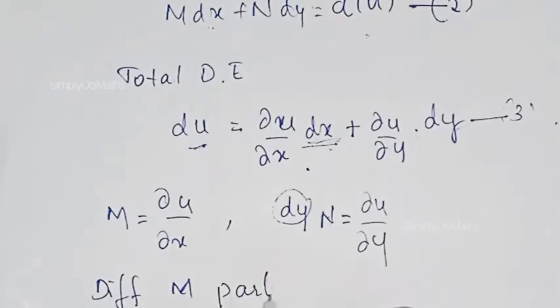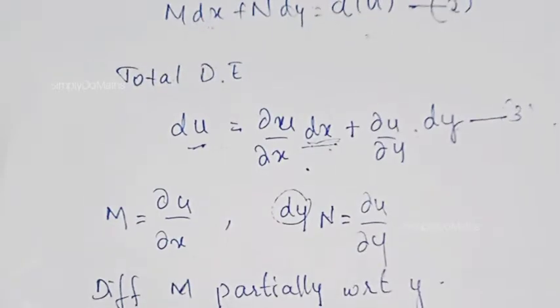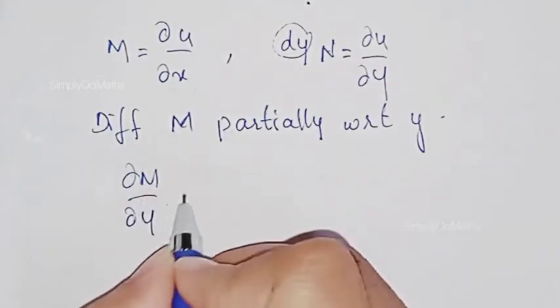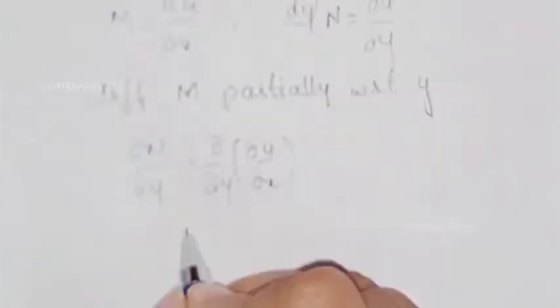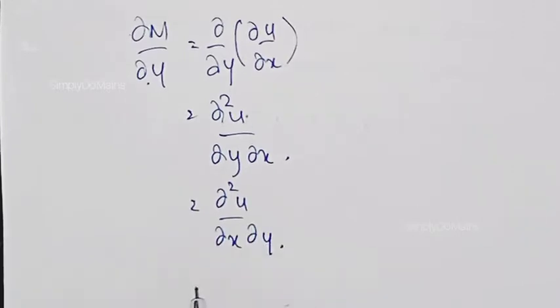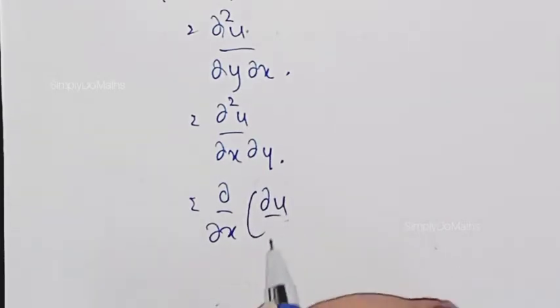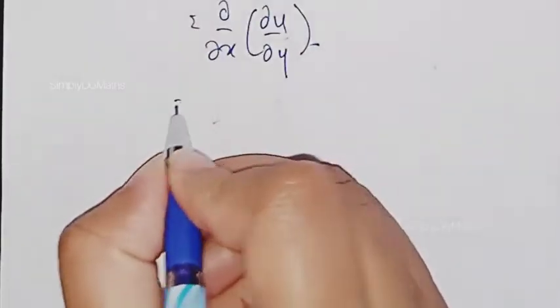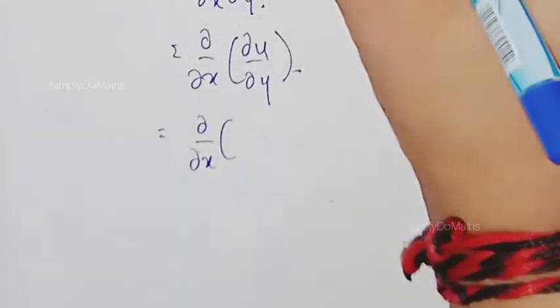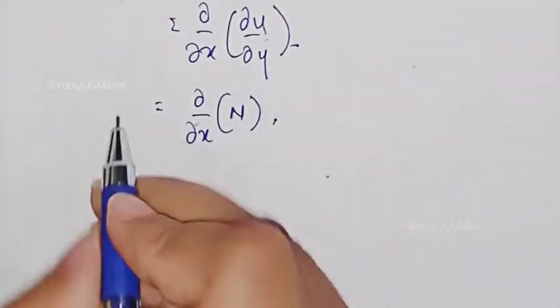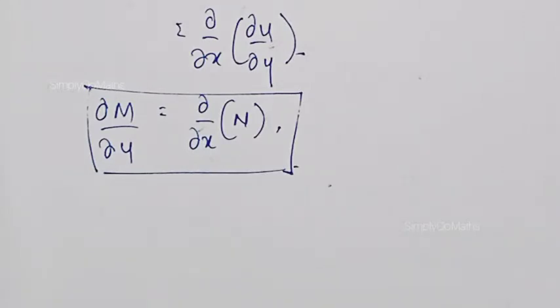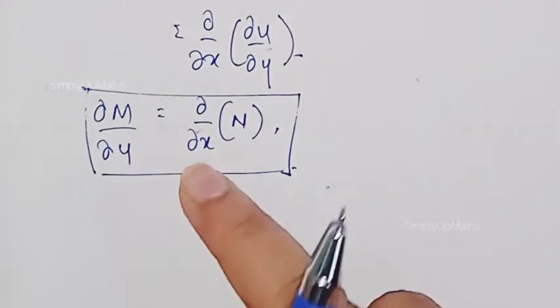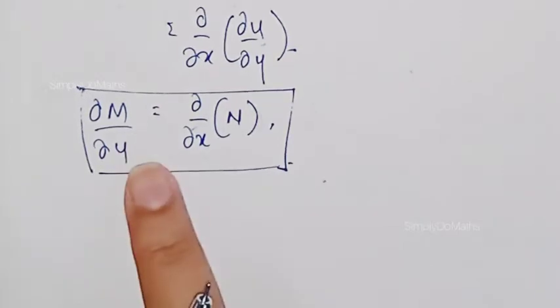Differentiating M partially with respect to y, we get ∂M/∂y. Substituting the value of M, which is ∂u/∂x, this can be written as ∂²u/∂y∂x, which is also ∂²u/∂x∂y, which equals ∂/∂x of (∂u/∂y). Since ∂u/∂y = N, we get ∂M/∂y = ∂N/∂x, which is the necessary condition for the given differential equation to be exact. If the given differential equation is to be exact, it must satisfy ∂M/∂y = ∂N/∂x.